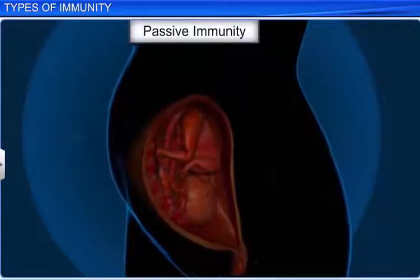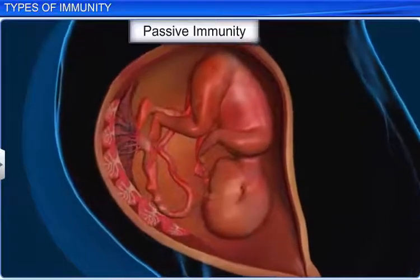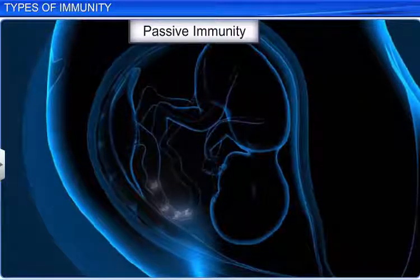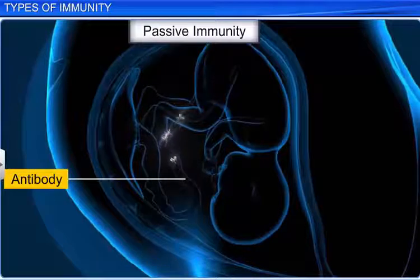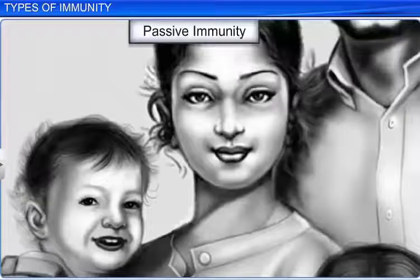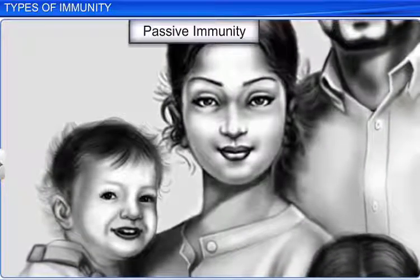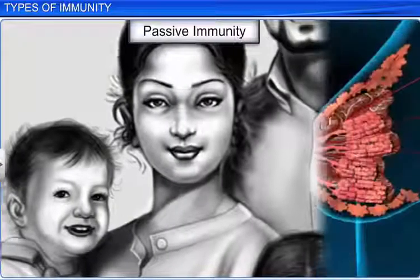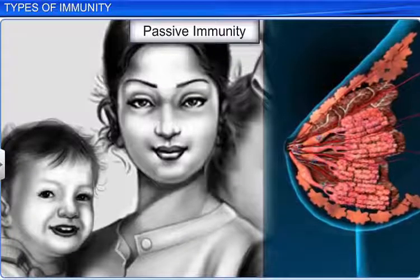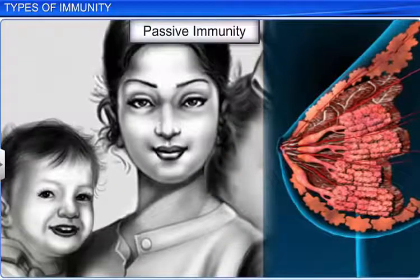On the other hand, passive immunity comes into play when ready-made antibodies are delivered directly into the body from external sources to protect it against foreign agents. The antibody that a fetus receives from its mother through the placenta during pregnancy is an example of passive immunity. Likewise, during the initial days of lactation, mother's milk contains a yellowish fluid called colostrum, that has copious amounts of the antibody IgA. Therefore, mother's milk also provides passive immunity to babies.